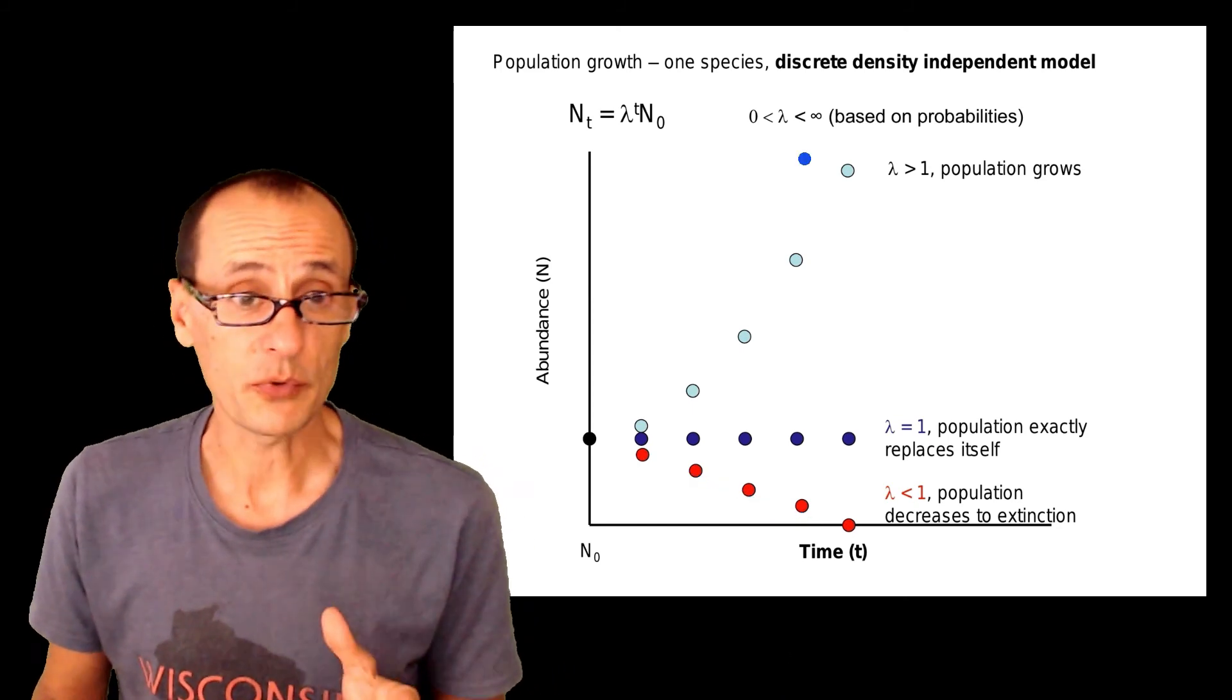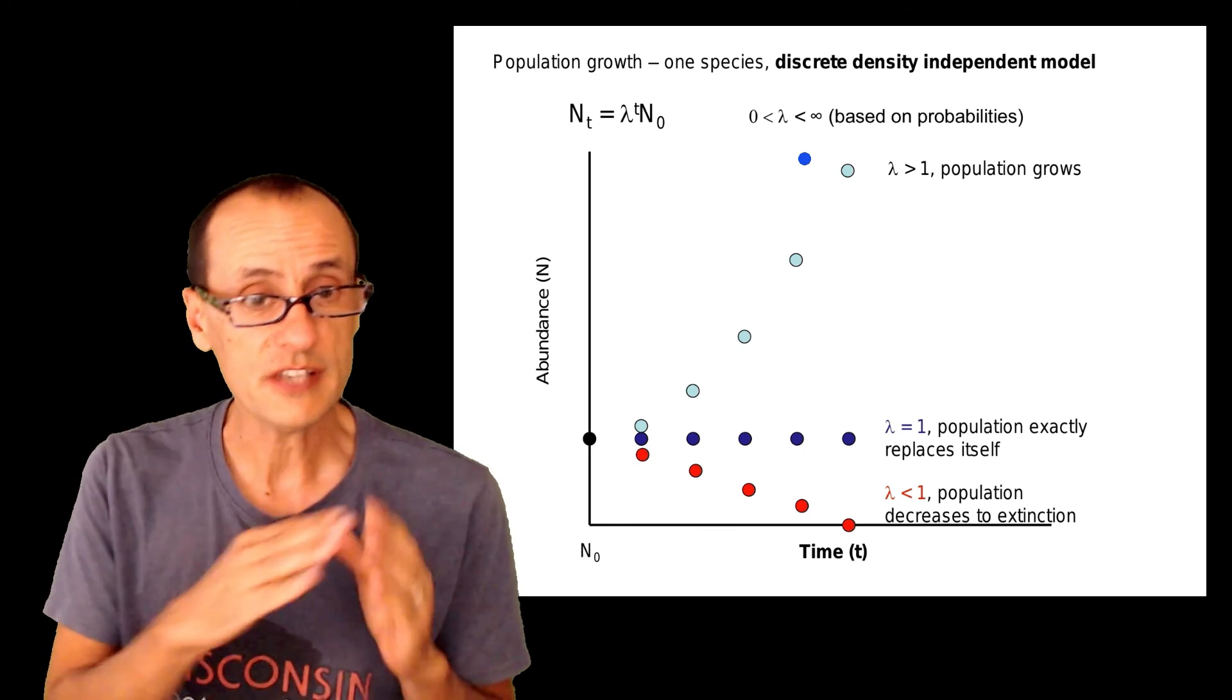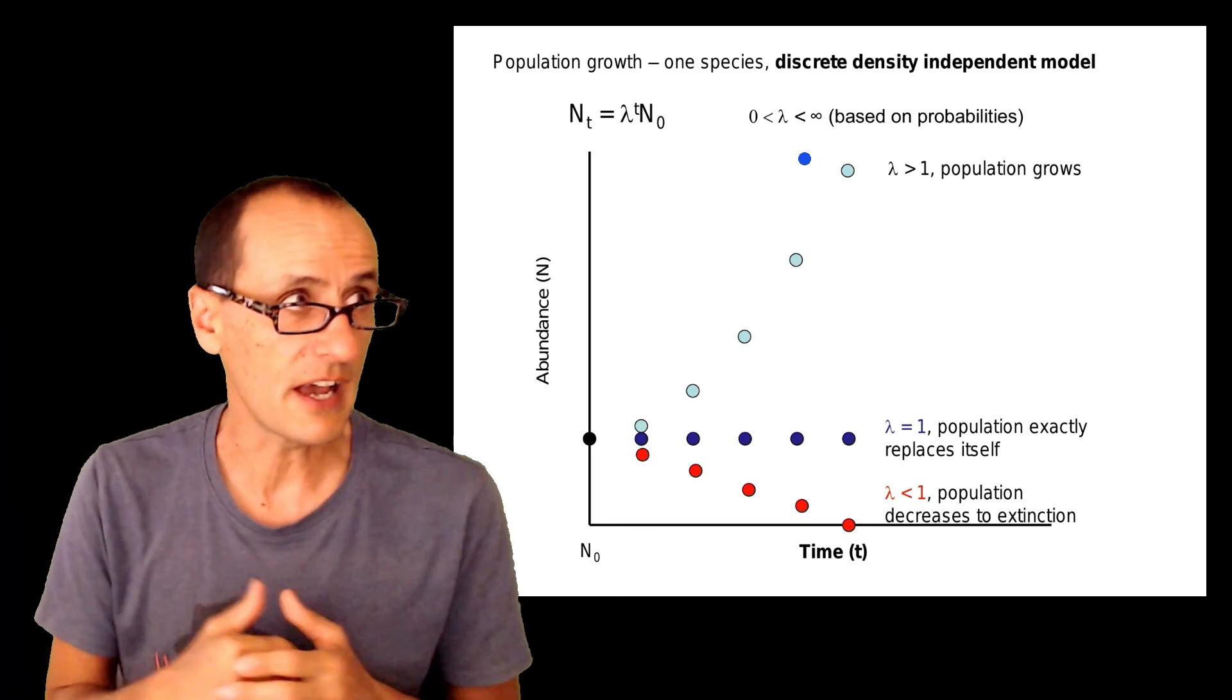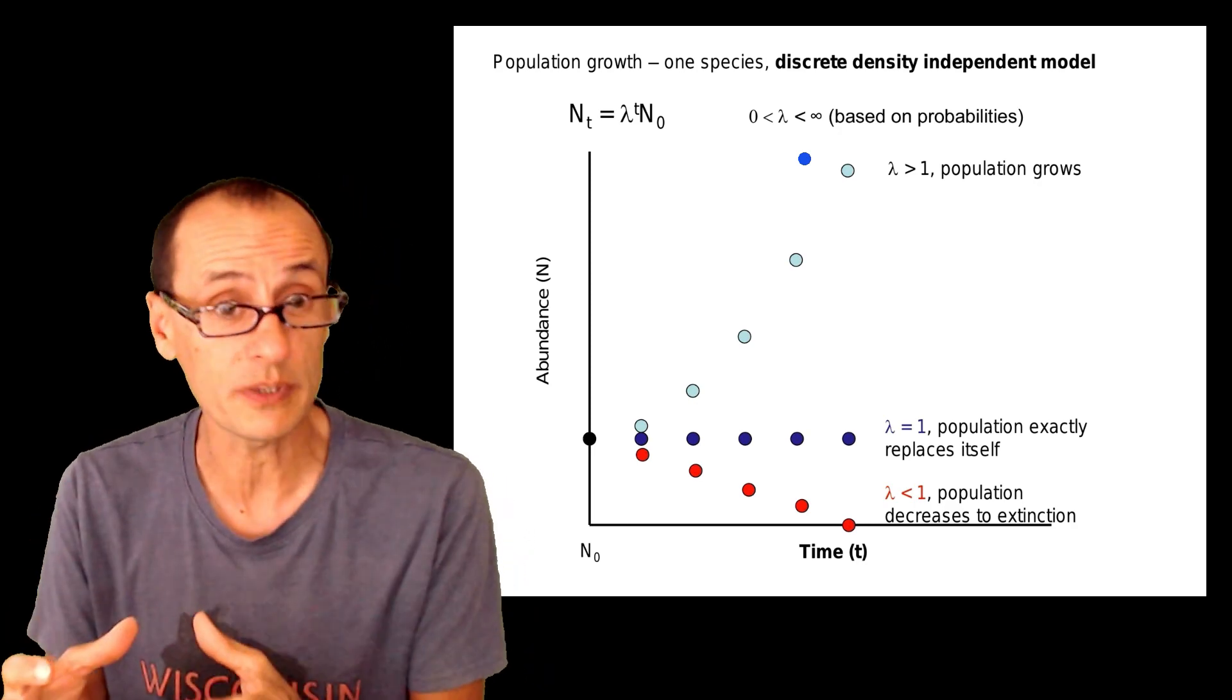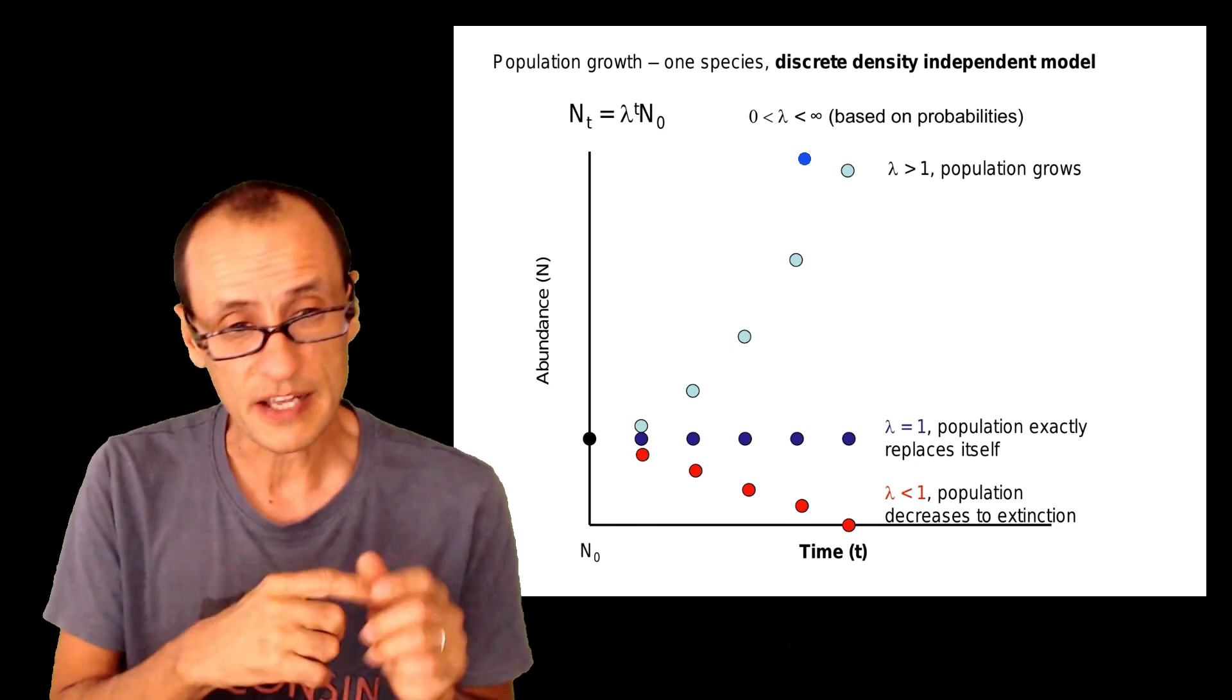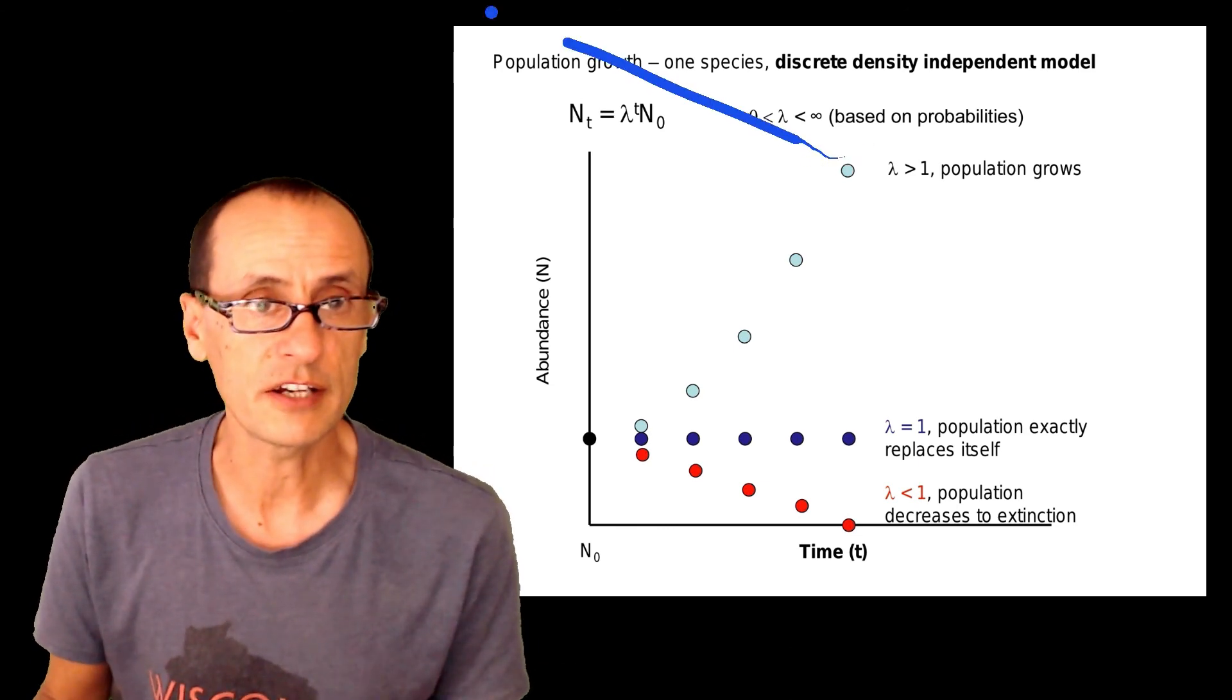The next models that we're going to look at are going to involve overlapping generations, and therefore continuous growth. You can think of this as kind of your interest in a bank being compounded continuously instead of being compounded annually, and populations are going to grow slightly differently because of that. Still exponential, but the calculations are slightly different.